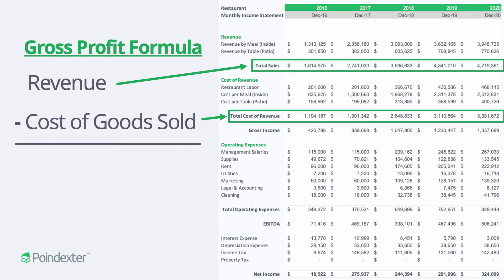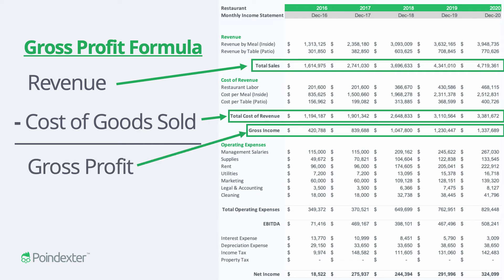All we do is take revenue, subtract cost of goods sold, and we end up with gross profit. Gross profit is the profit left over from revenue-producing activities — the highest level of profit. It is the profit before we've taken out any overhead, management salaries, or things generally used to run the business that are not directly involved with producing revenue.